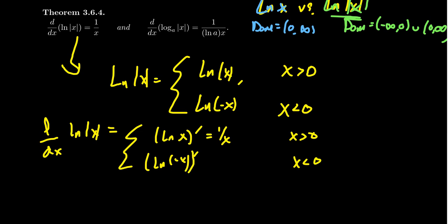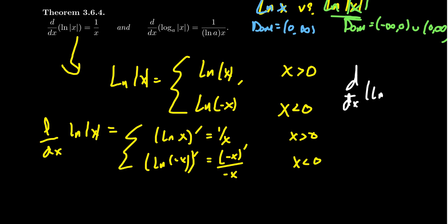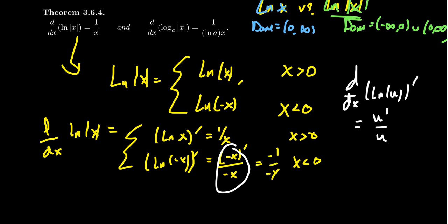How does that work? By the chain rule, you're going to get negative one over negative x. Specifically, this looks like (negative x)′ over (negative x). When you take the derivative of a natural log of some function u, the derivative is always u prime over u by the chain rule. The derivative of negative x is negative one. So you get negative one over negative x, which simplifies to just 1 over x. That verifies our formula — the derivative of ln|x| is still 1 over x. We can expand the domain and retain the original derivative.